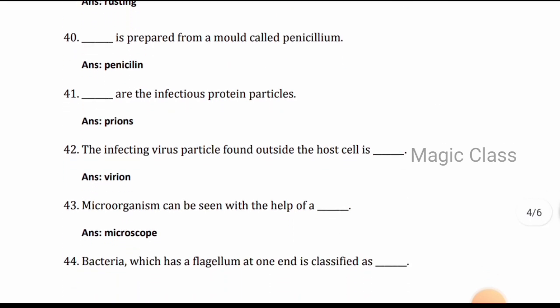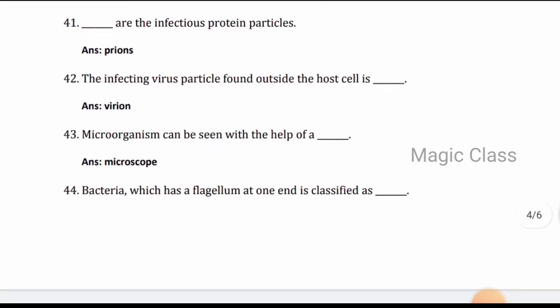Question 41: Prions are the infectious protein particles. Question 42: The infecting virus particle found outside the host cell is called virion. Question 43: Microorganisms can be seen with the help of microscope.